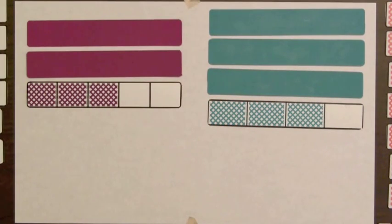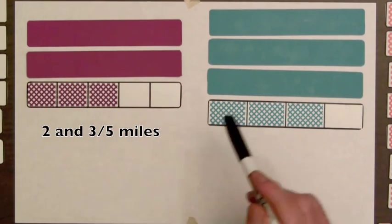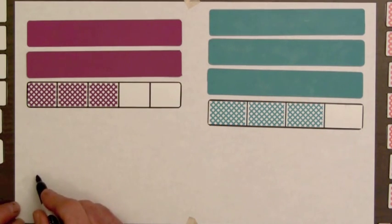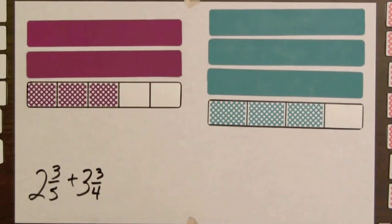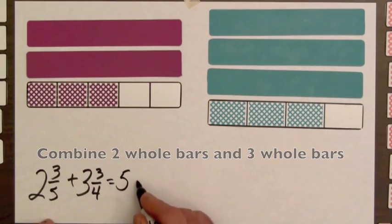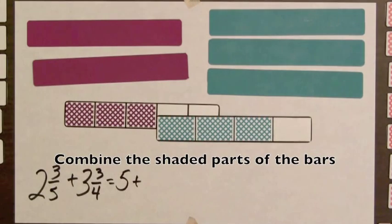Suppose it is two and three-fifths miles from the beginning of a hiking trail to an abandoned mine, and it's another three and three-fourths miles from the mine to a lake. So we've got two and three-fifths plus three and three-fourths. So we want to get the total distance. So we combine the two sets of bars, and we're going to have five whole bars. And now we can think of combining the shaded amounts of these bars, and we're going to have more than one whole bar.